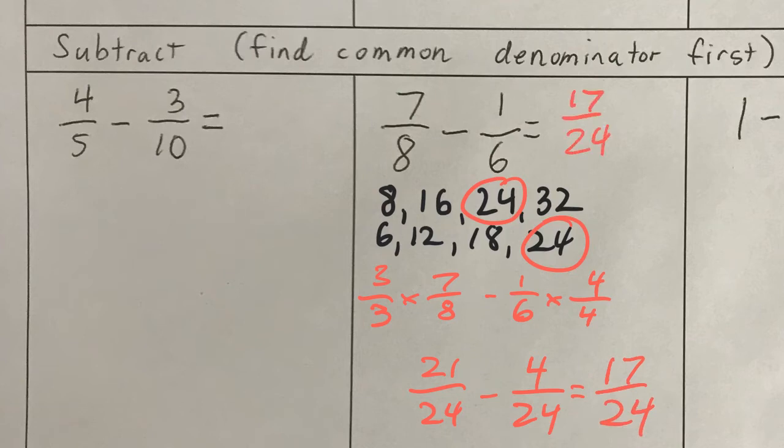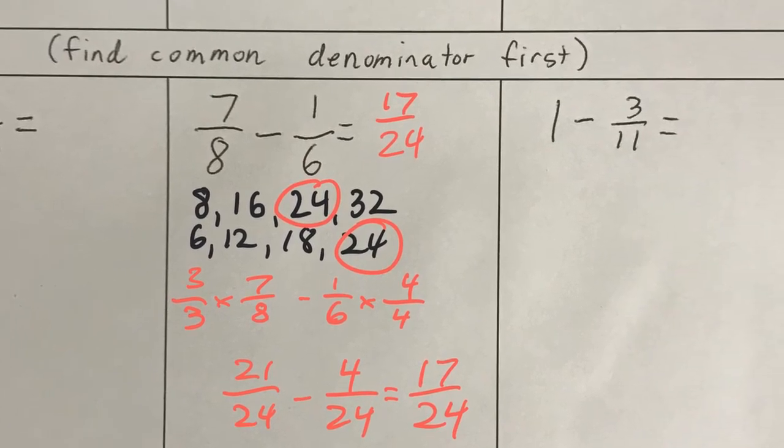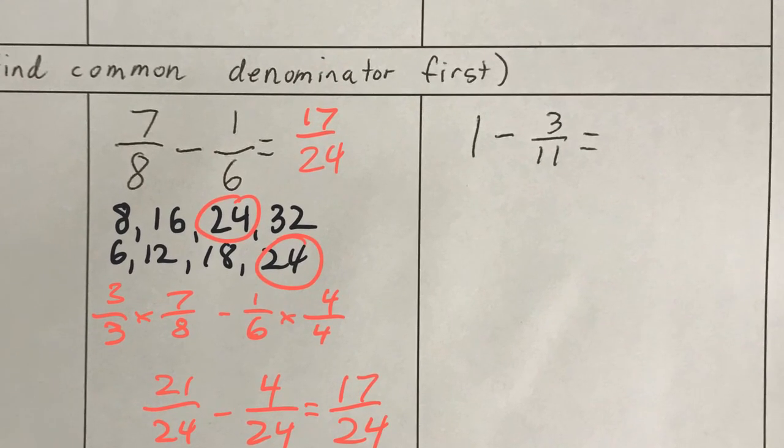And the next one looks a little bit different. But this is actually the easiest one you could do. Because we simply need to put 1 into 11ths. And anything over itself is 1. So, 11 elevenths minus 3 elevenths. And you can subtract that. And that's your answer. That's the easiest one. And finally, something new.